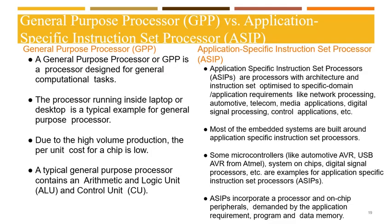Now let us understand the difference between a general purpose processor and an application-specific instruction set processor (ASIP). General purpose processors are mainly designed for general computational tasks — for example, laptops and desktops contain general purpose processors. Due to high volume production, the per-chip cost is very low. ASIPs have architecture and instruction sets optimized to specific domains like network processing, automotive, telecom, media applications, digital signal processing, and control applications. Some microcontrollers, system-on-chip designs, and digital signal processors are examples of ASIPs. These processors consist of on-chip peripherals, program memory, and data memory demanded by application requirements.